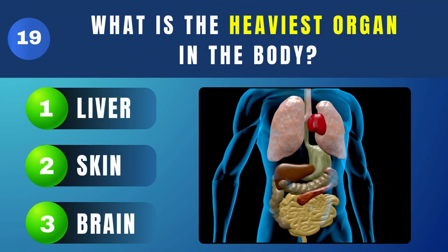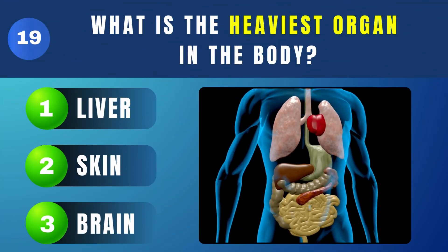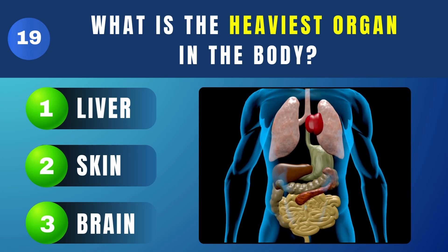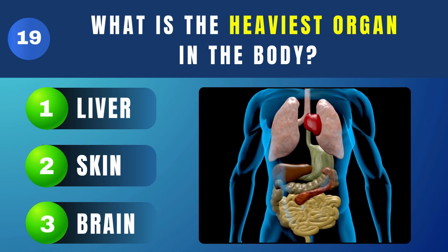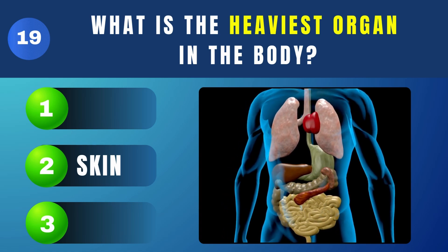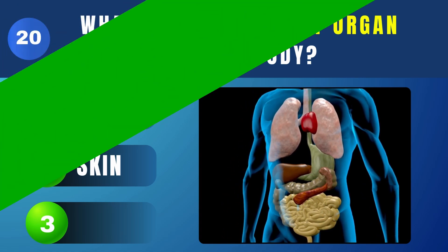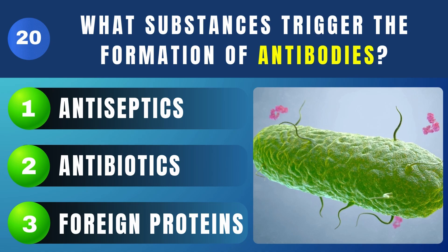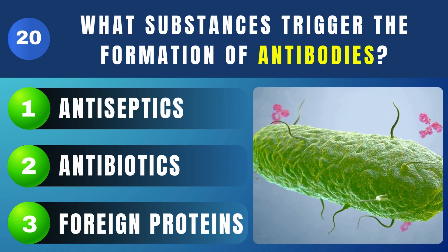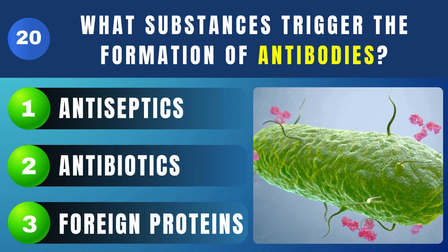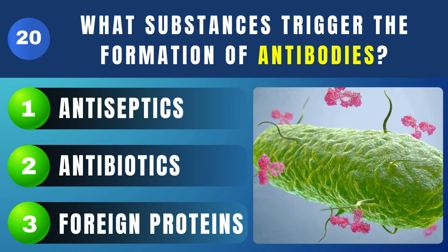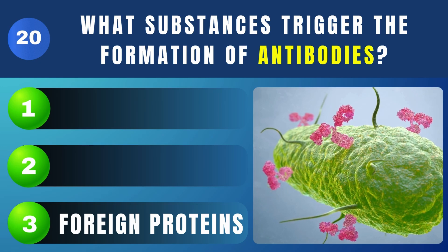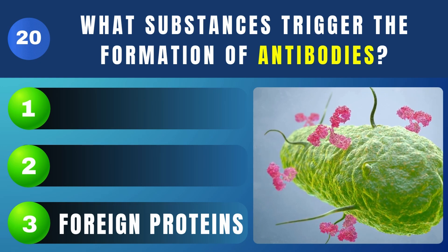What is the heaviest organ in the body? Skin. What substances trigger the formation of antibodies? Foreign proteins.